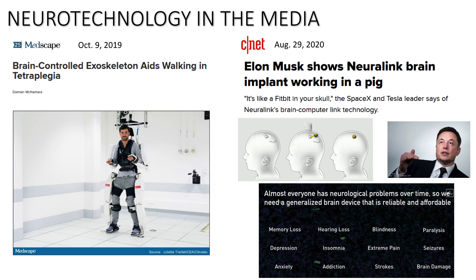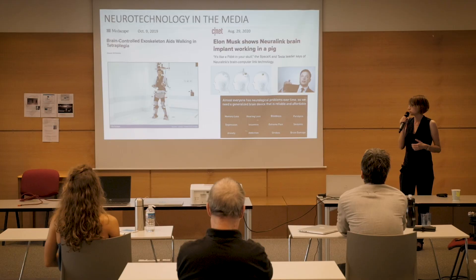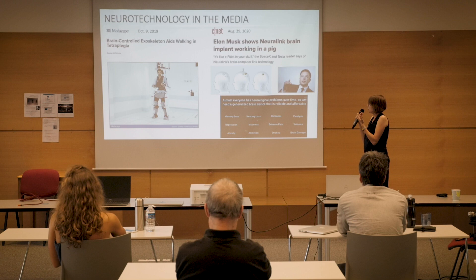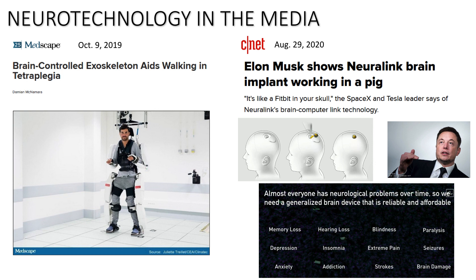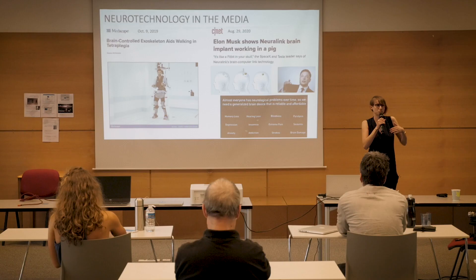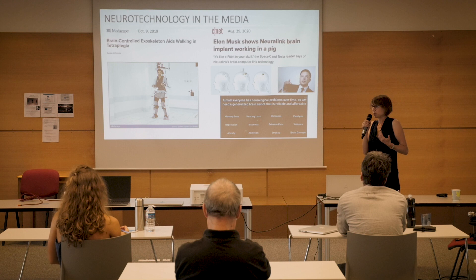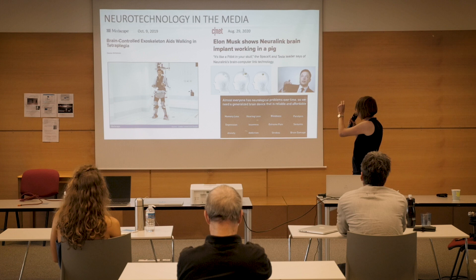Elon Musk, who is the CEO of Neuralink — and maybe you know him better for Tesla and SpaceX — also wants to target the brain. He presented the chip they want to implant in the brain, and he presented a slide telling everyone that they aim to cure memory loss, paralysis, brain damage, addiction, insomnia, anxiety — like every neurological disease. For the general audience this is sometimes implausible, whereas if you have some neuroscience knowledge, you know this is really difficult to cure with only one small chip.